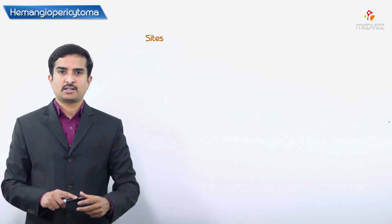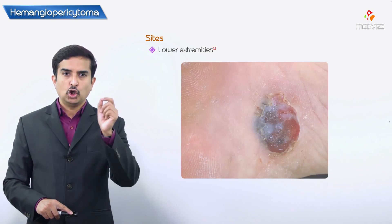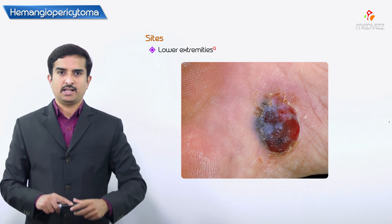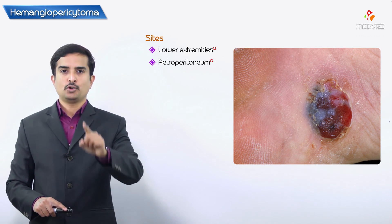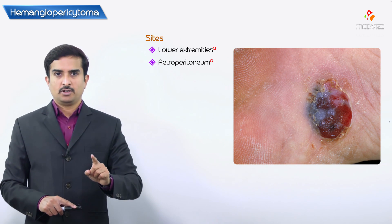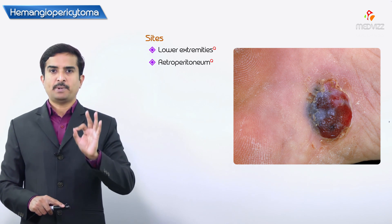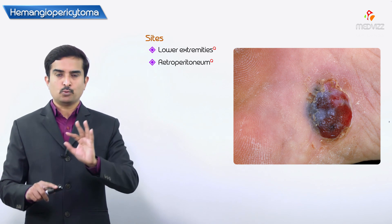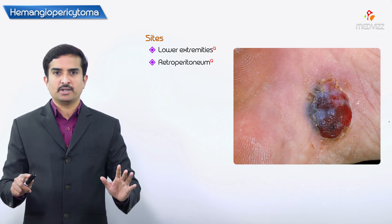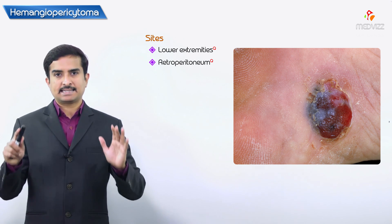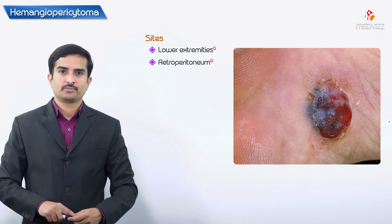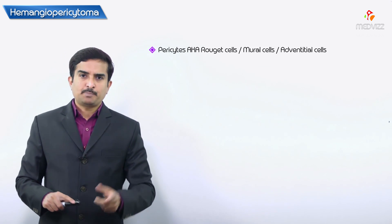The common sites are what they will ask you in the MCQs. The common sites for hemangiopericytoma are the lower extremities or the retroperitoneum. This is the point you need to remember regarding common sites.